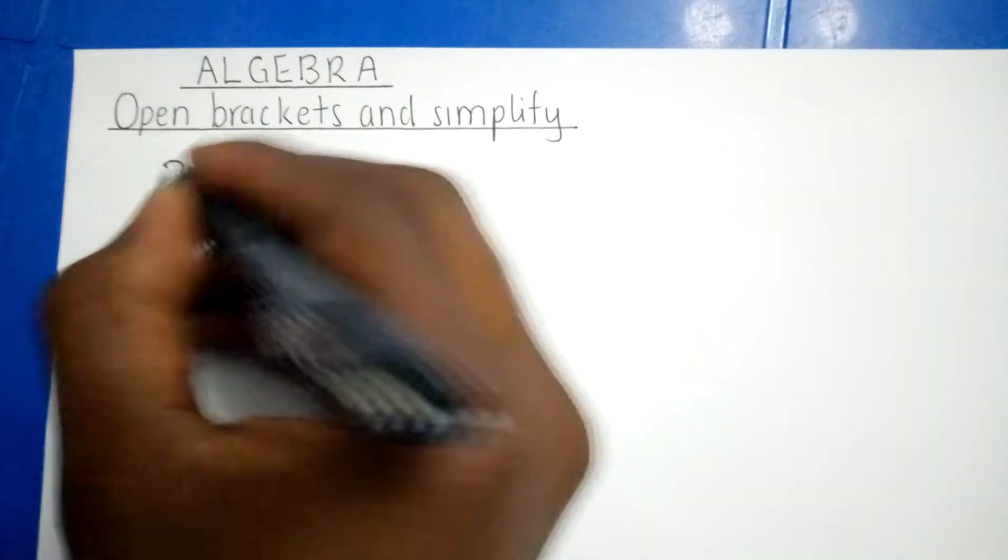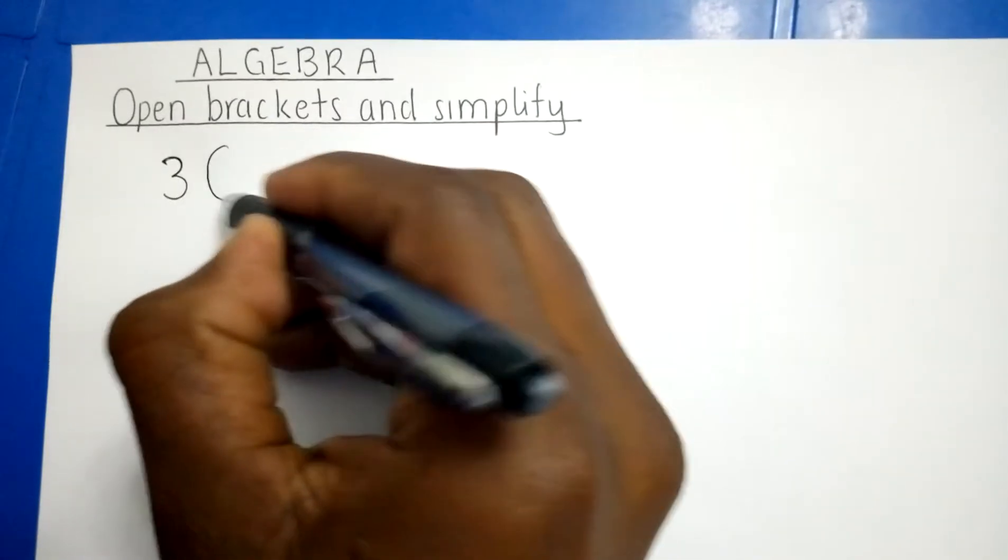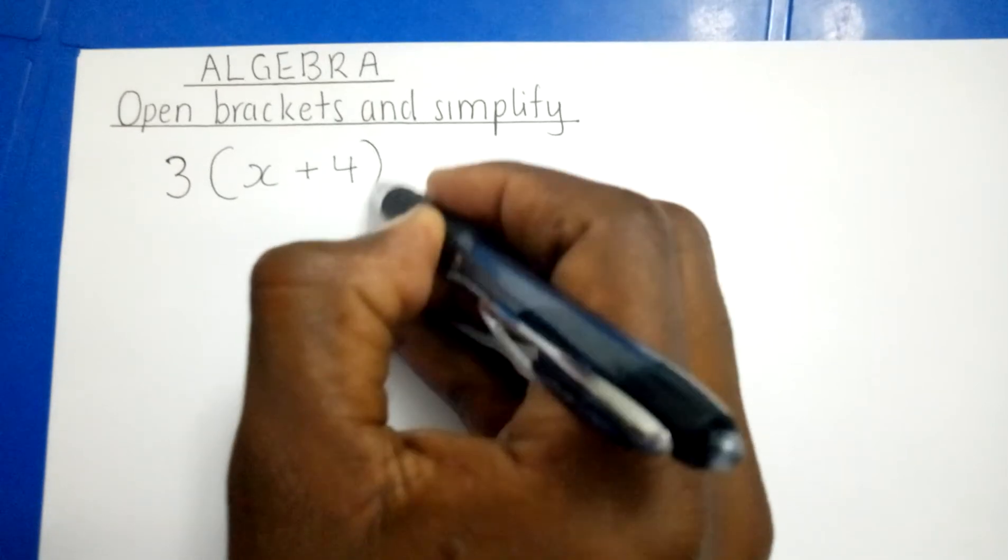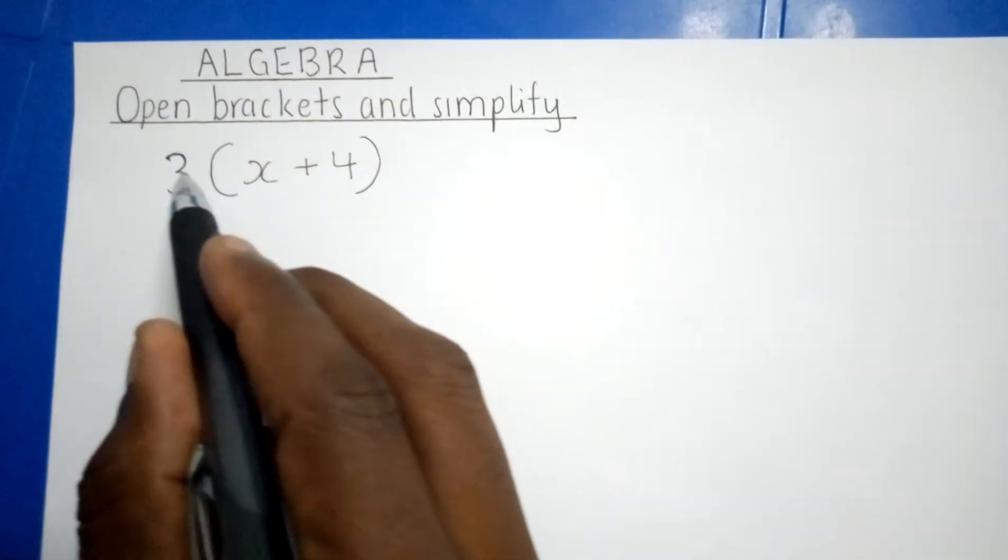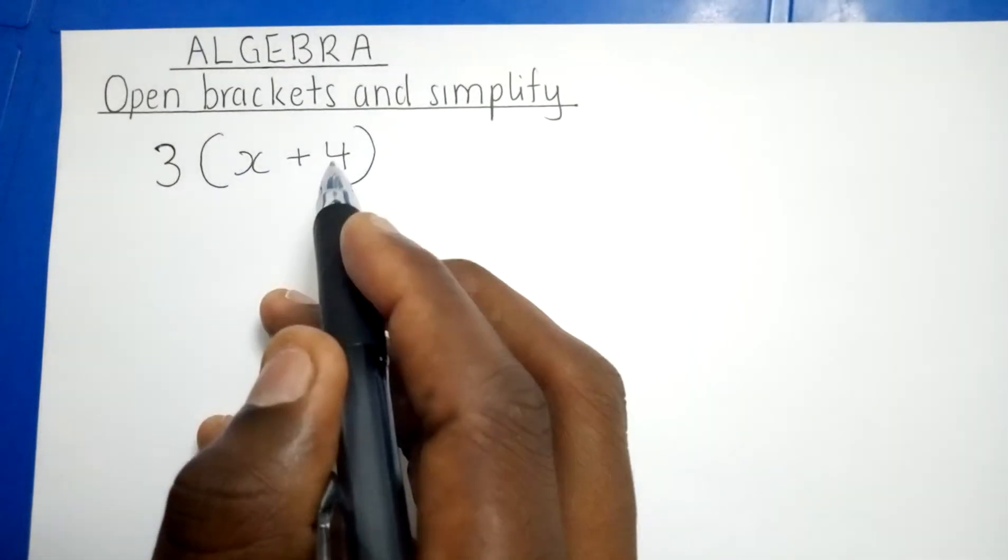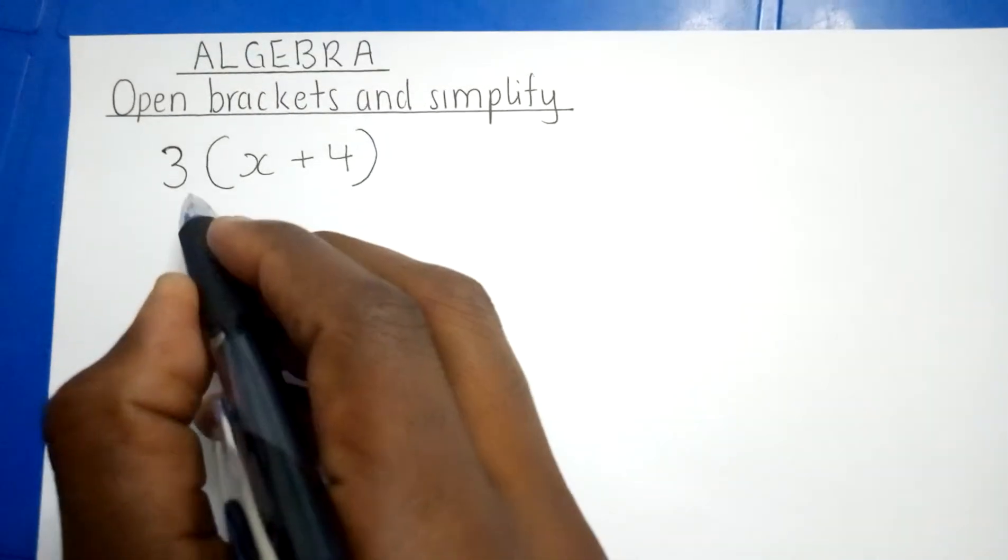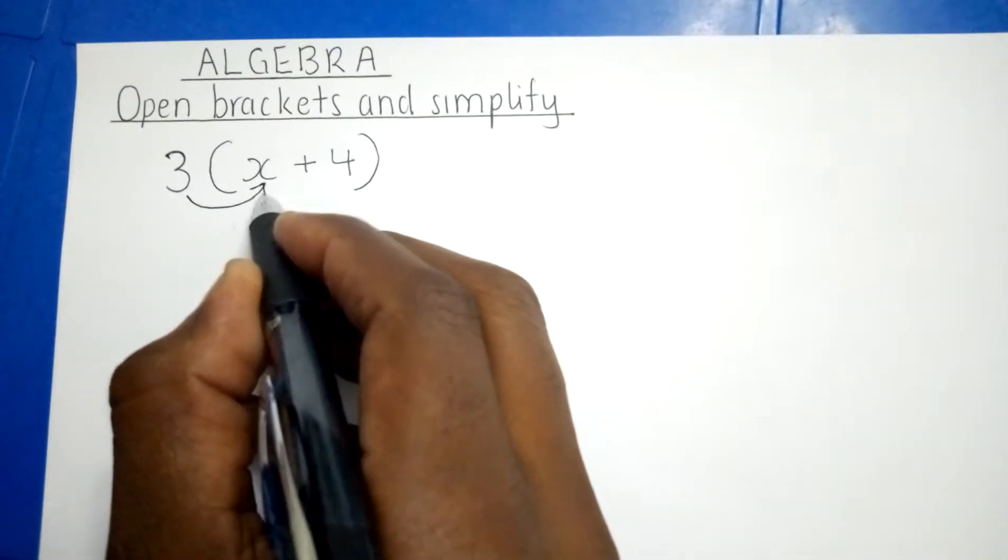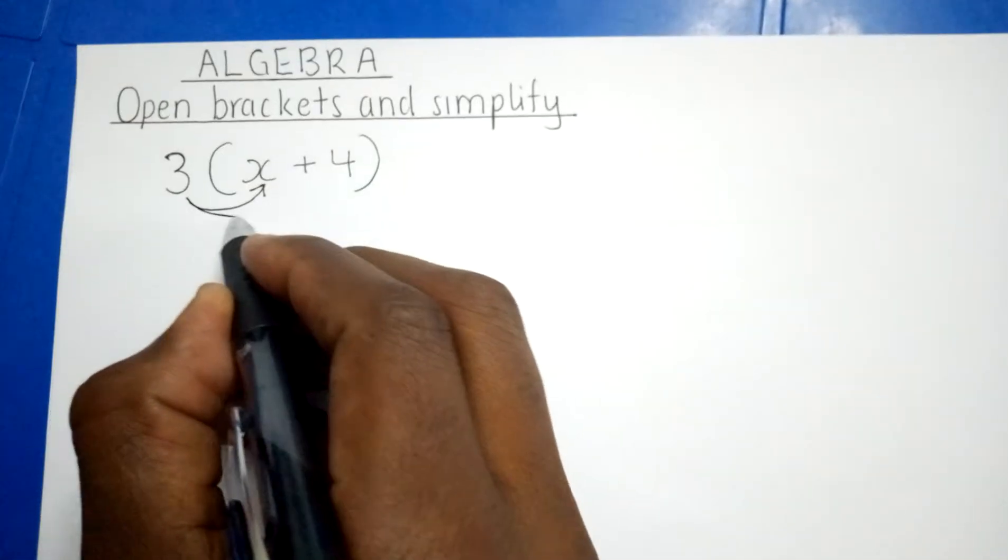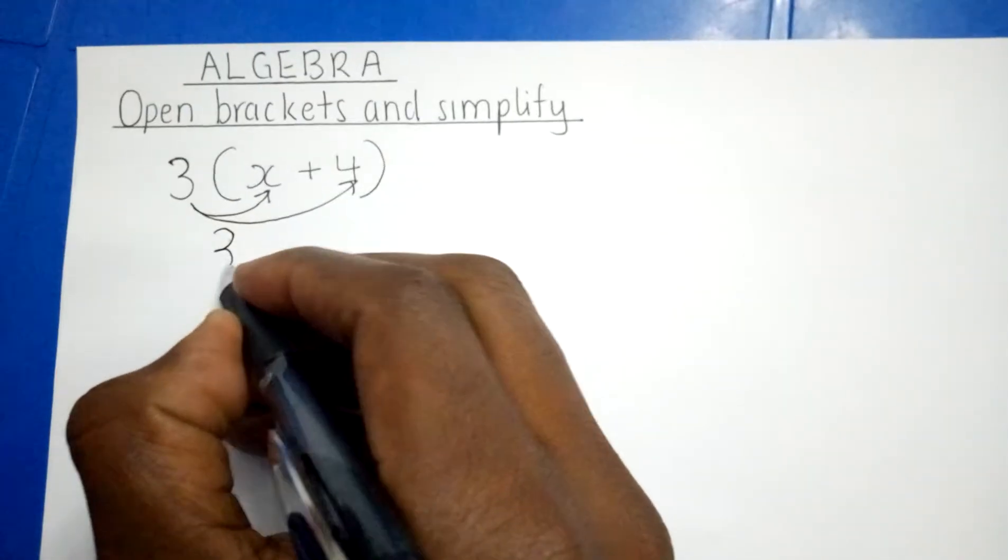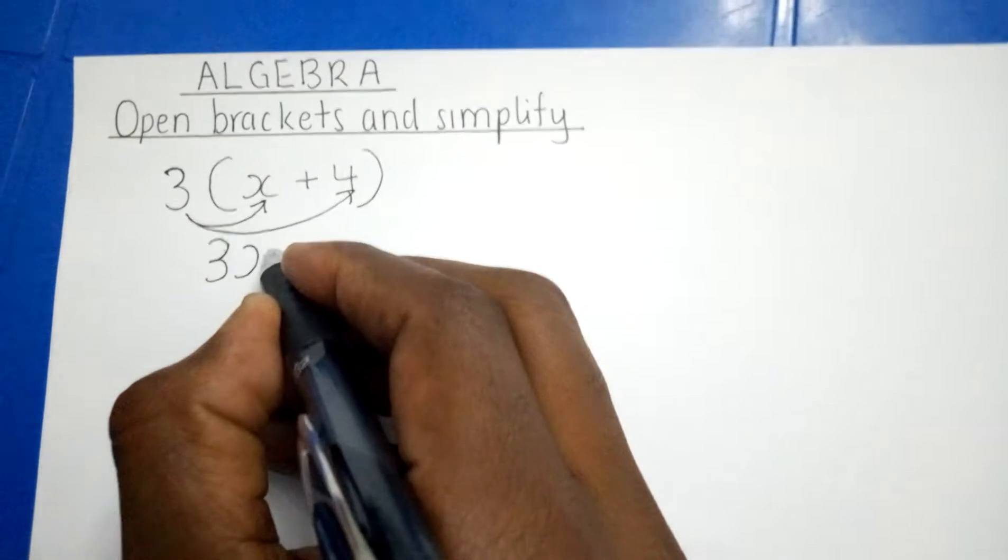If I have 3(x+4), remember this number is multiplying the whole bracket. So in order to open the bracket, 3 will multiply the first number and again 3 will multiply the second number. Hence we shall get 3x plus 12, because 3 times 4 we get 12.